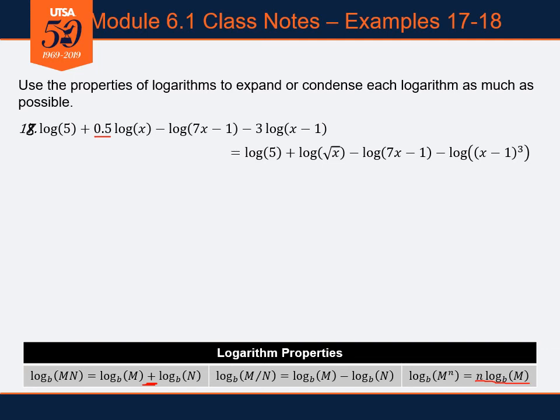The rest comes down unchanged: minus log of (7x minus 1), minus — and there's another number times a logarithm. Let's deal with that right now as well. I bring that 3 up as a power inside my logarithm, giving log of (x minus 1) to the third power. I've used the power rule to take those coefficients and rewrite them as powers.